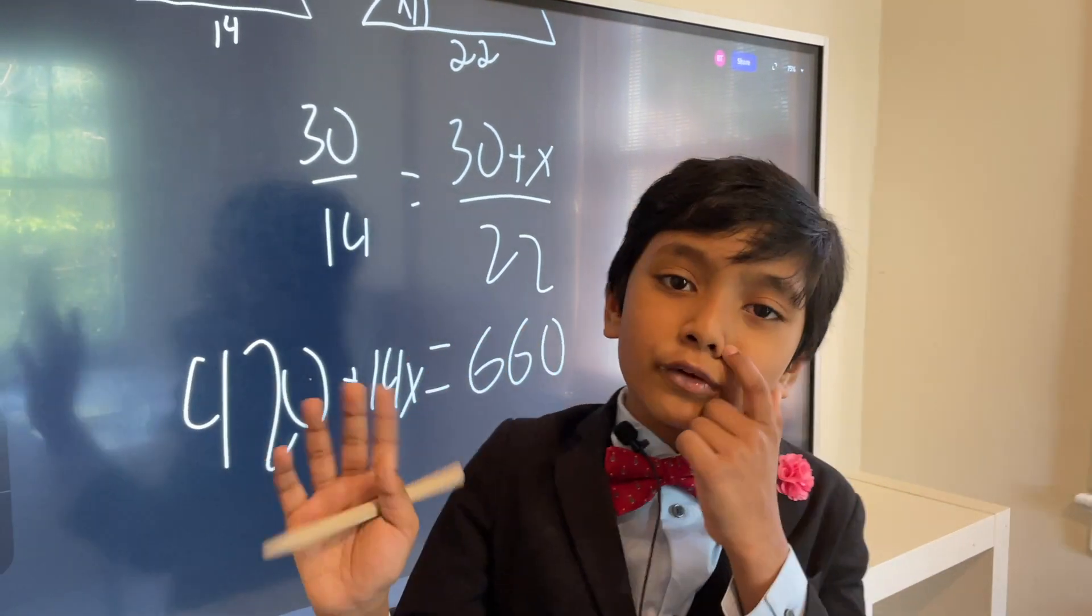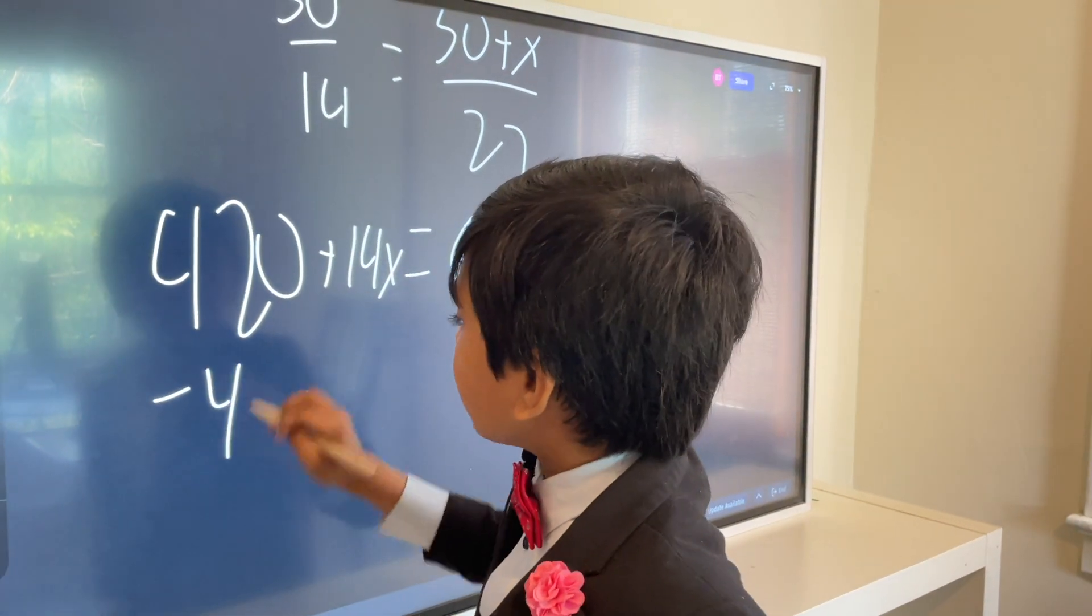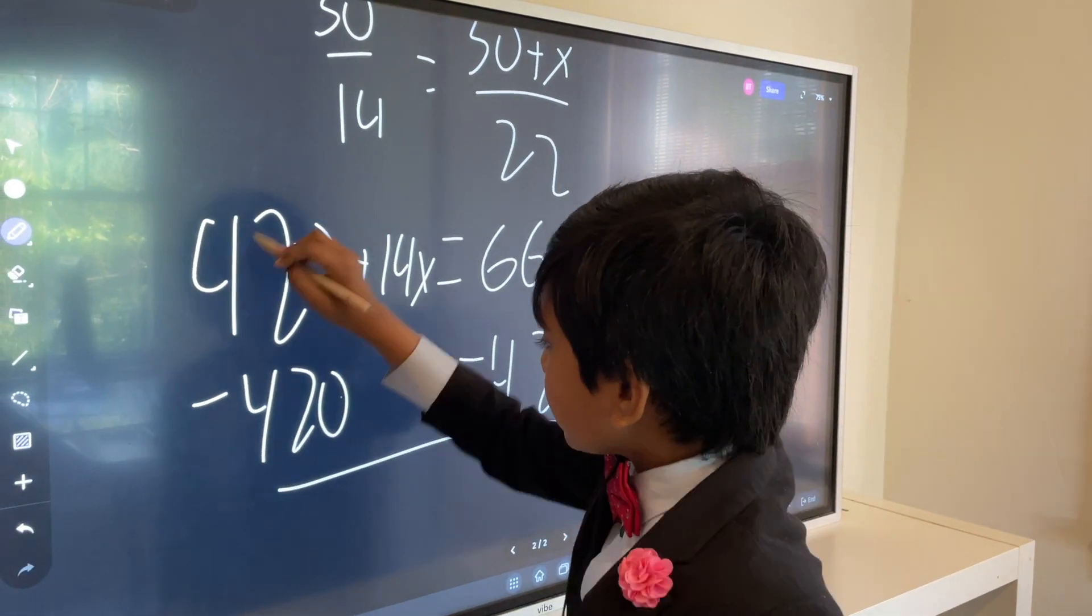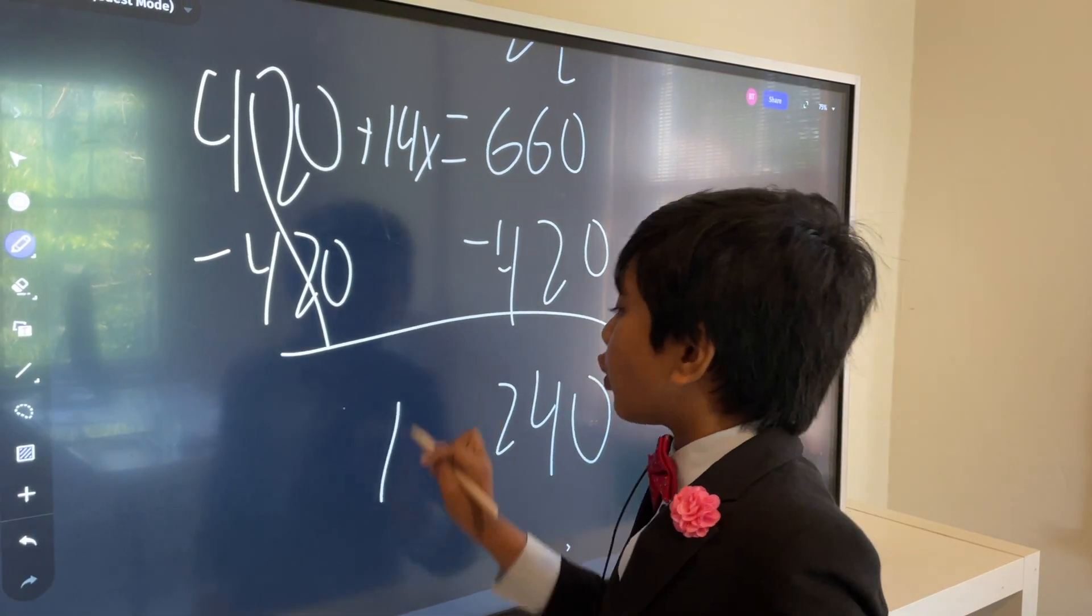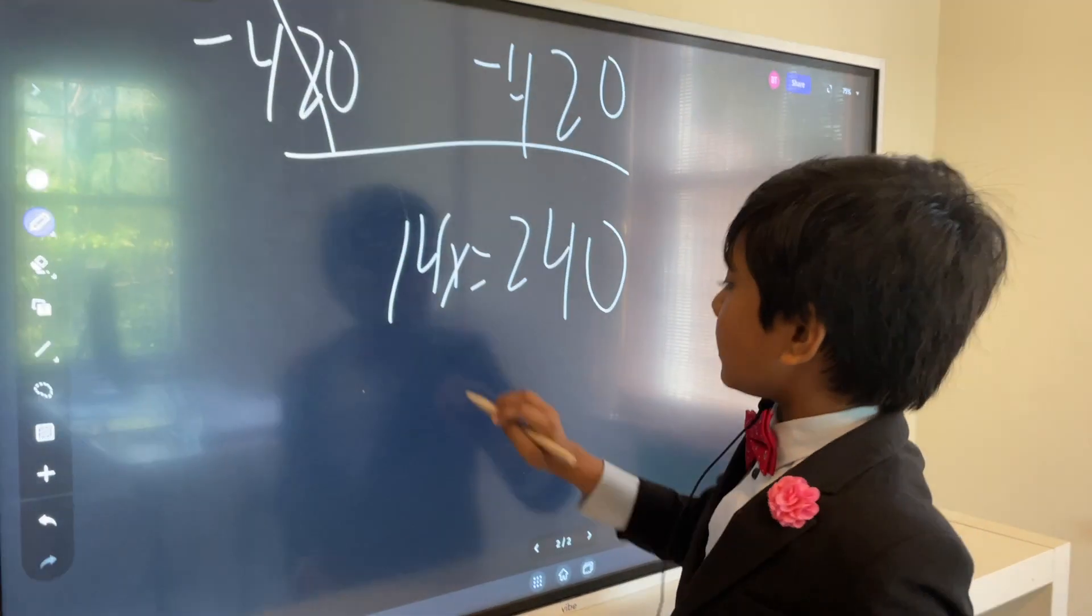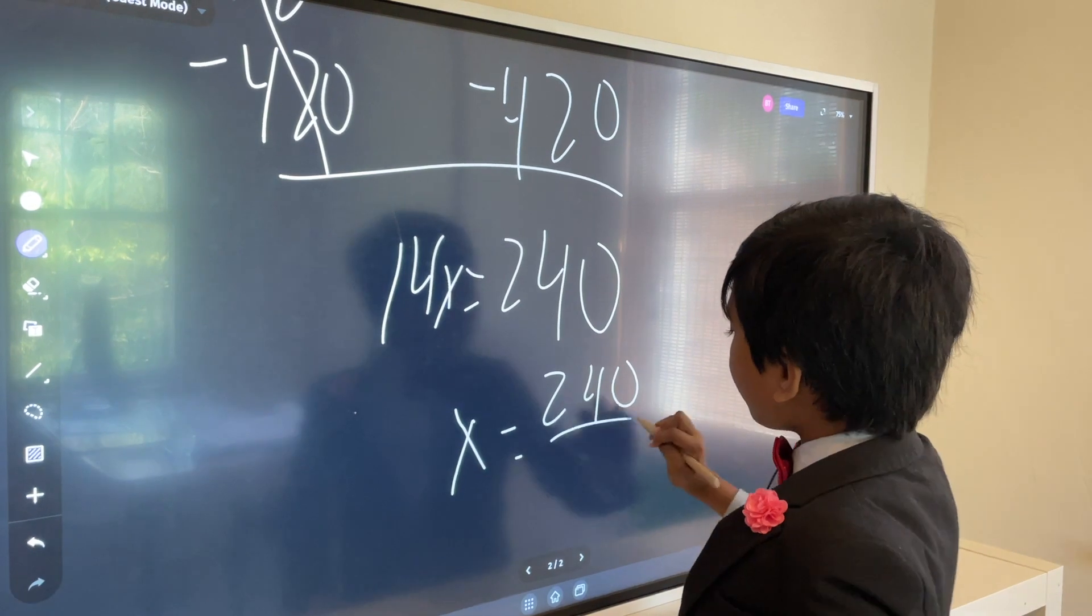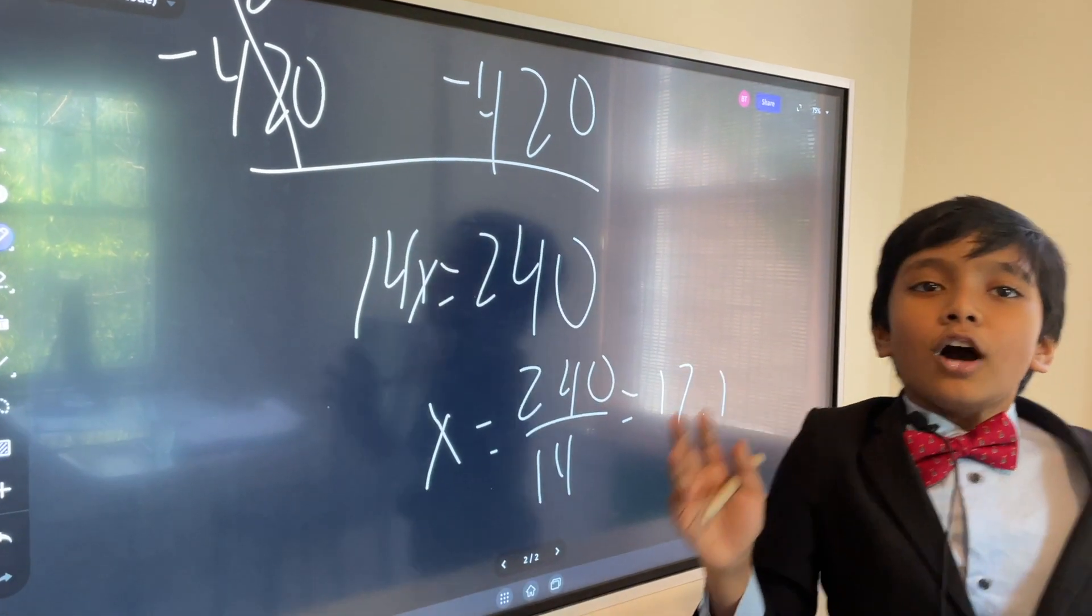Now we have to subtract 420 from both sides. Minus 420, minus 420, cancel! And then we get 240 equals 14x. Alright! So now we need to divide both sides by 14. 240 over 14 equals 17.1!